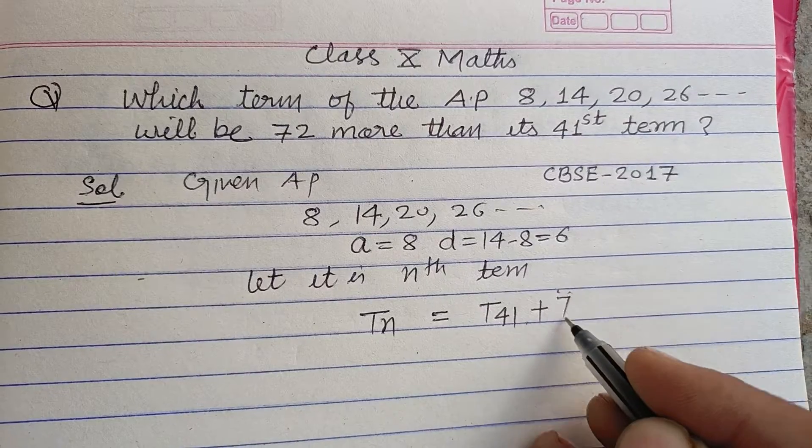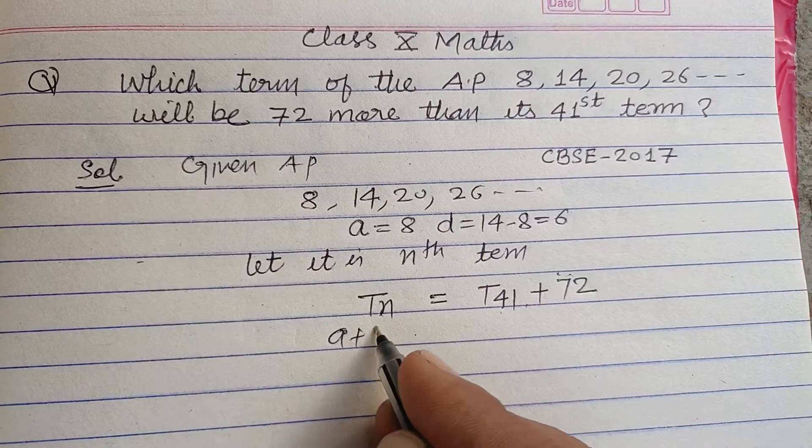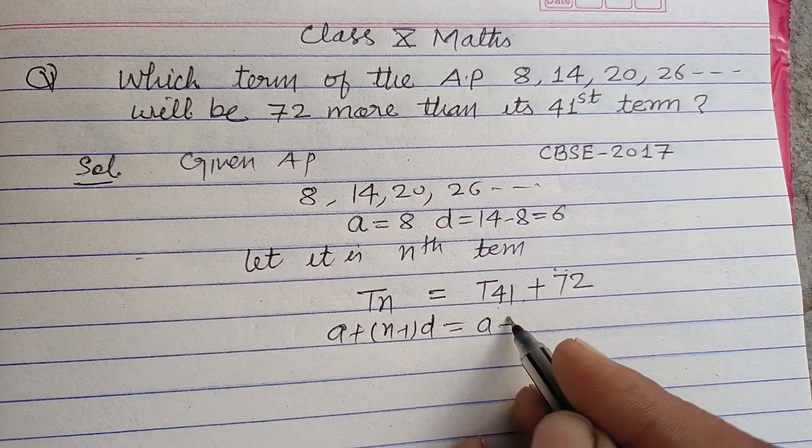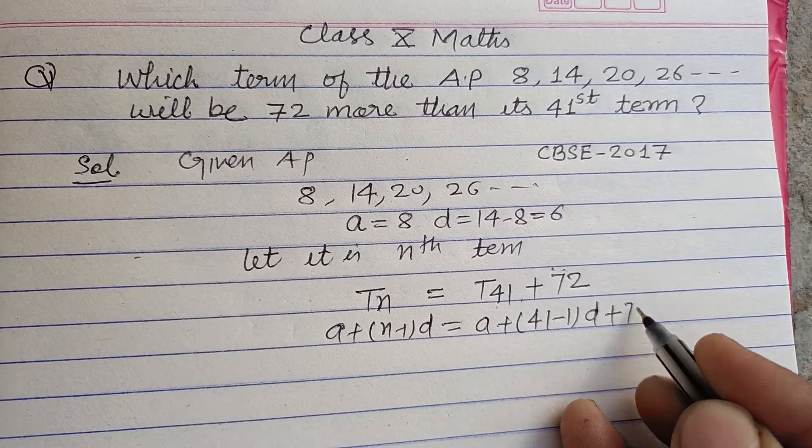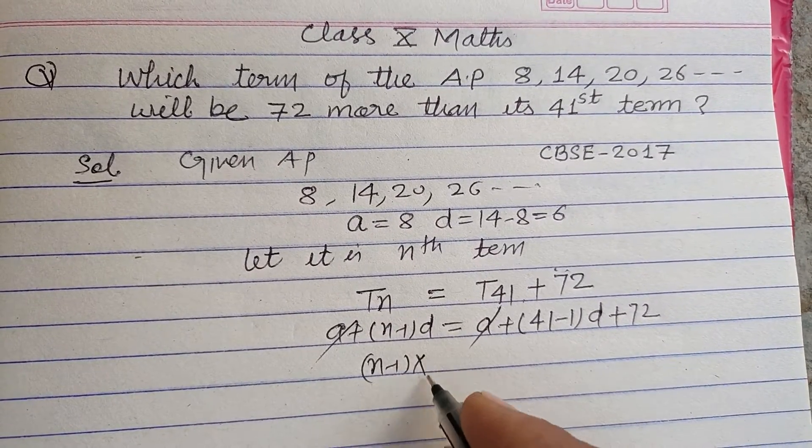Putting in the values: a + (n-1)d = a + (41-1)d + 72. The a terms cancel, so (n-1)d equals 40d plus 72.